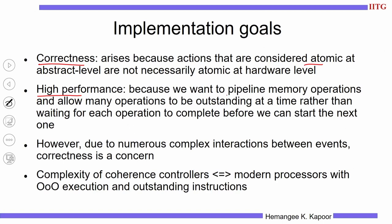We want to improve performance by pipelining the memory accesses and keeping several outstanding accesses in parallel. If a cache incurs a miss, we send that request to the memory, but at the same time the cache can start servicing other requests. The same thing can happen with memory — if the memory is serving a particular request on one bank, we can let the other banks process some other requests in parallel. When you have such complex interactions between the cache, the memory, and the interconnect, we are going to be concerned about the correctness of our system.